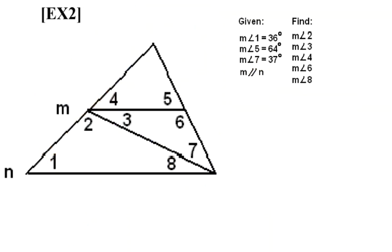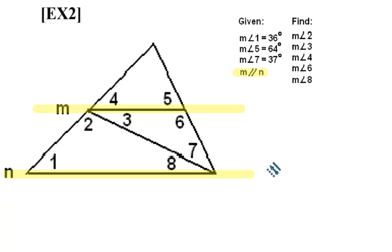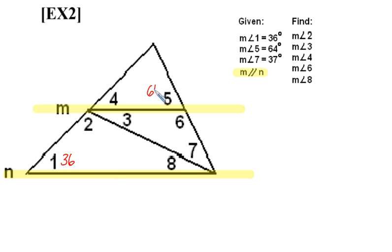The second example is now pictured on the screen. The first thing we notice is that lines M and N are parallel. Just like in the previous example, let's visually indicate on our picture that those lines are parallel, either by using a highlighter or by scribbling in those lines to make them appear more bold. It is also wise to extend them beyond where M and N were initially drawn. Let's place the given information in the picture: the measure of angle 1 is 36 degrees, the measure of angle 5 is 64 degrees, and the measure of angle 7 is 37 degrees.